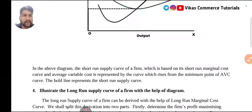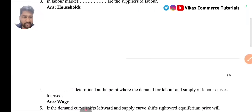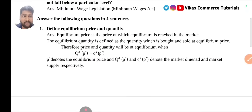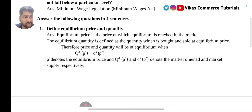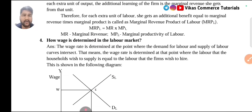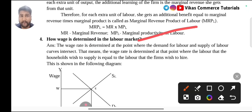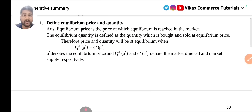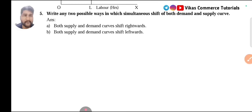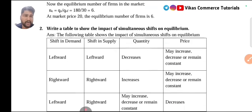Coming to Chapter 5, Market Equilibrium. From market equilibrium, which are the two-mark important questions? First, define equilibrium price and equilibrium quantity — a very, very important question. Mark this question. Define equilibrium price and quantity is a must-study question and has not been given in four or six marks, so this is purely for two marks. Also study question number four: how is wage determined in the labour market? This was asked in previous year 2023 A1 and has appeared in model question papers. So two important questions: define equilibrium price and quantity, and how wage is determined in the labour market.